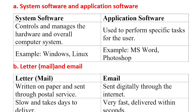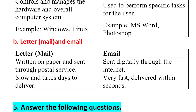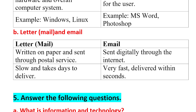Examples of system software include Windows and Linux. Regarding the difference between a letter and email: a letter is written on paper and sent through the postal service, which takes days to deliver. Email is sent digitally through the Internet and can be delivered within a second.